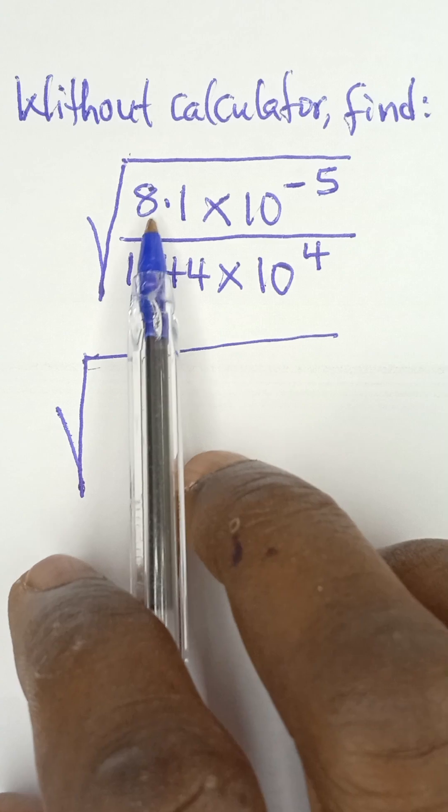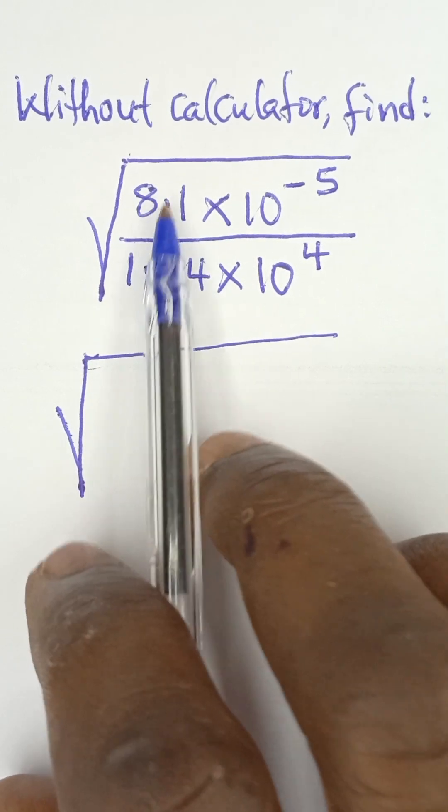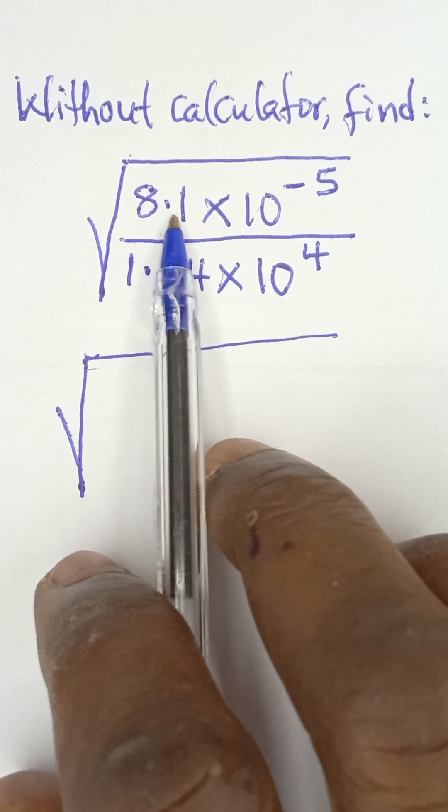Now, if you look at this, this is 8.1. For us to make it 81 so that we can have an easy way to find the root, because 81 is a perfect square.